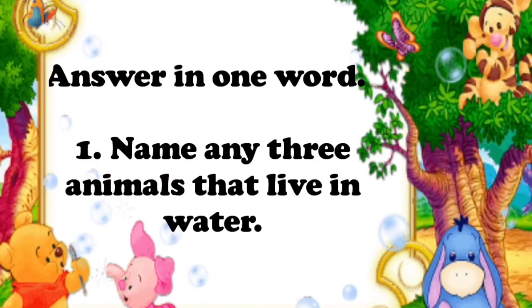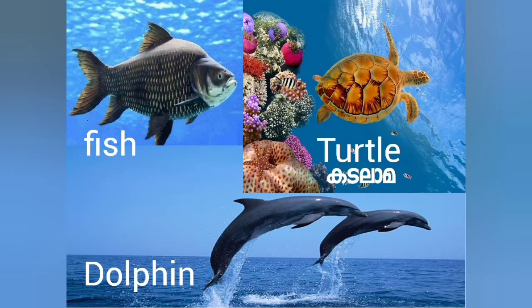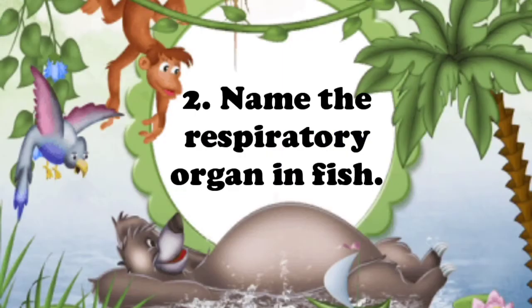First question: answer in one word. Name any three animals that live in water. You know that there are many organisms that live in water. You can name any three — for example, fish, turtle, and dolphin. You can also write shark, seal, or any fish.